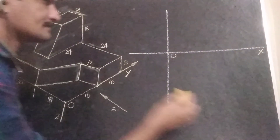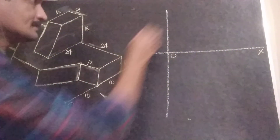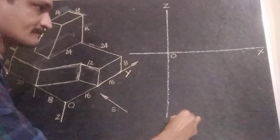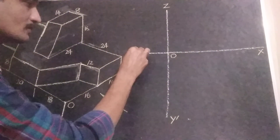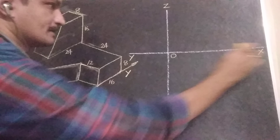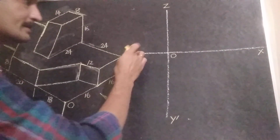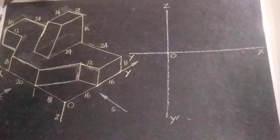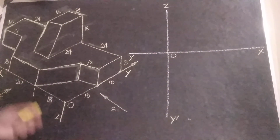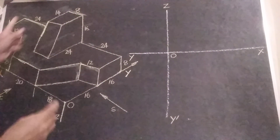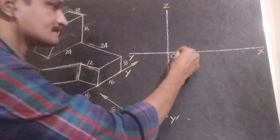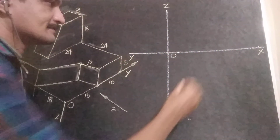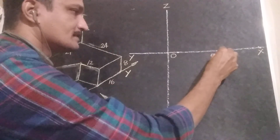This one is the x-axis, this one is the z-axis, and the x-y line meets at the origin. Along the x-axis, we can draw 56 units — the total distance is equal to 56.